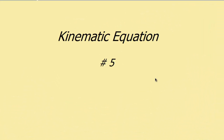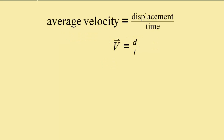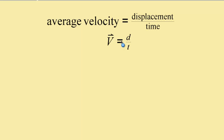In this video, we're going to tackle the last of our kinematic equations that we will use to describe the motion of objects algebraically. We're going to start with our expression for average velocity, which is simply displacement divided by time. Velocity is displacement divided by time.